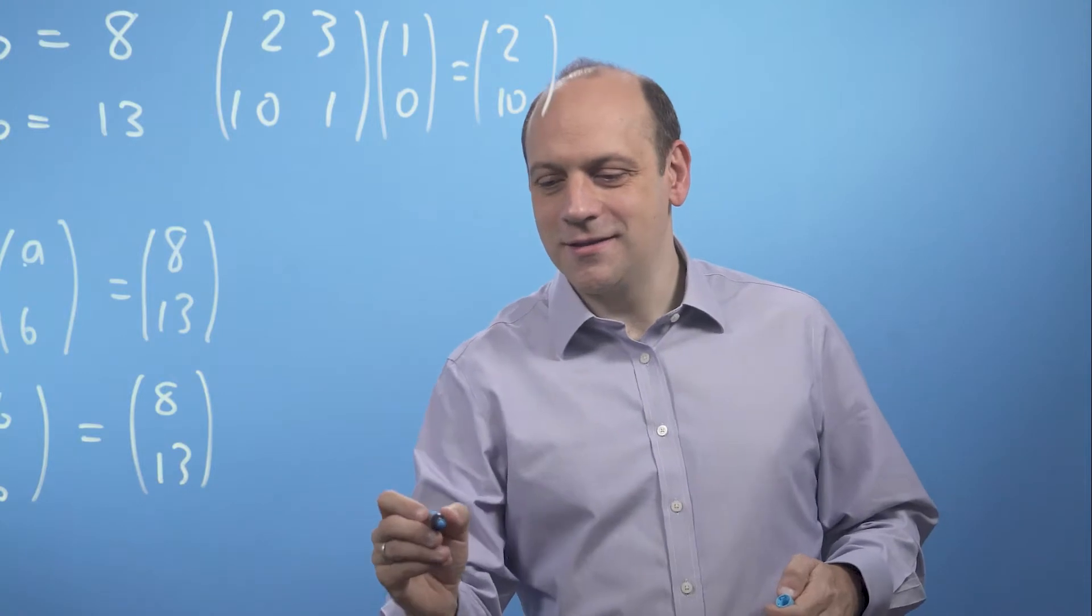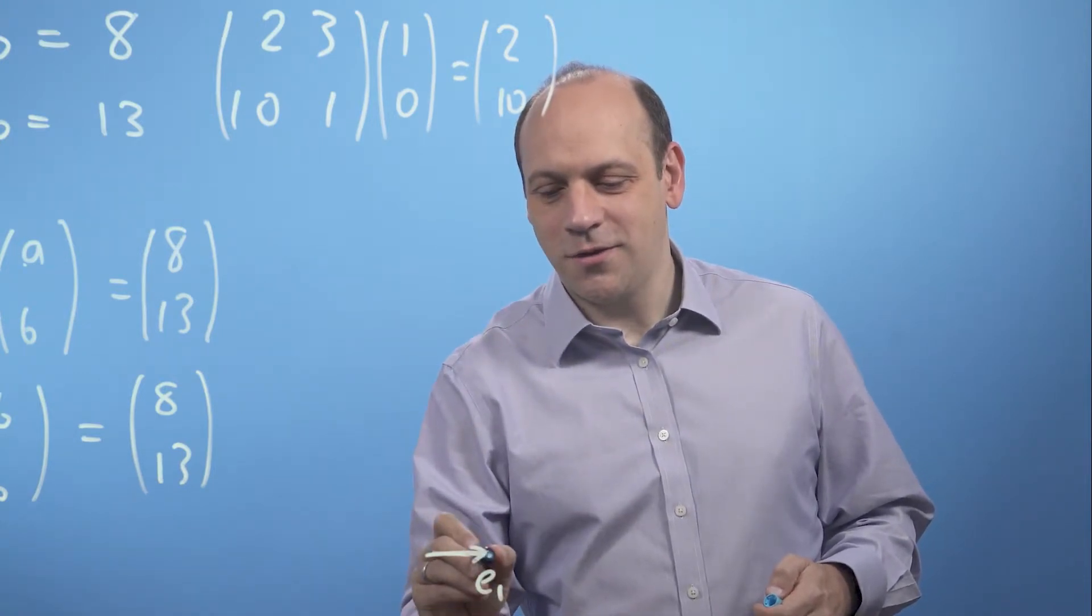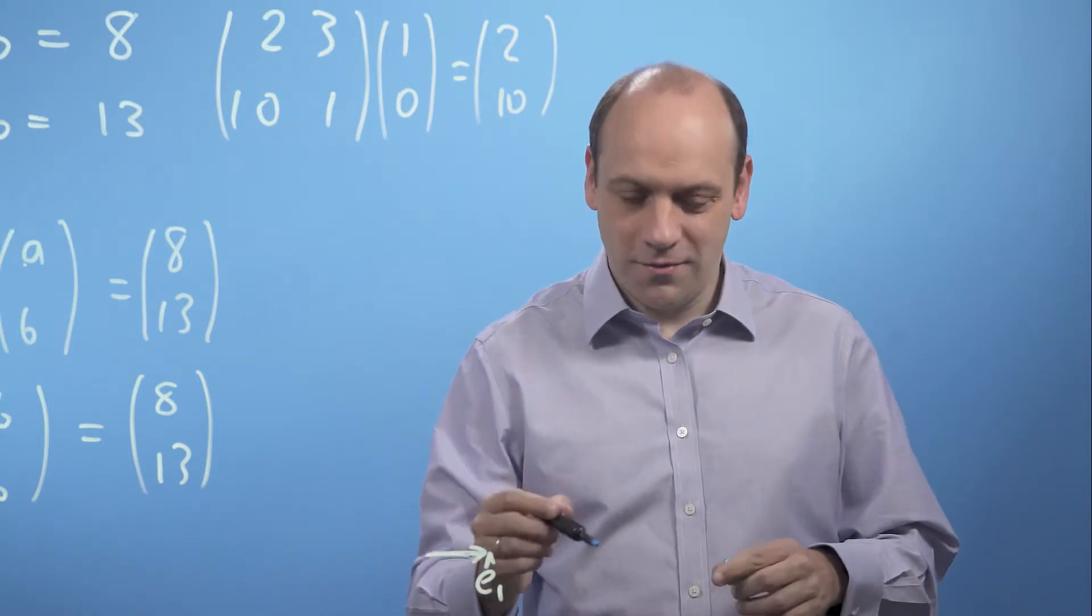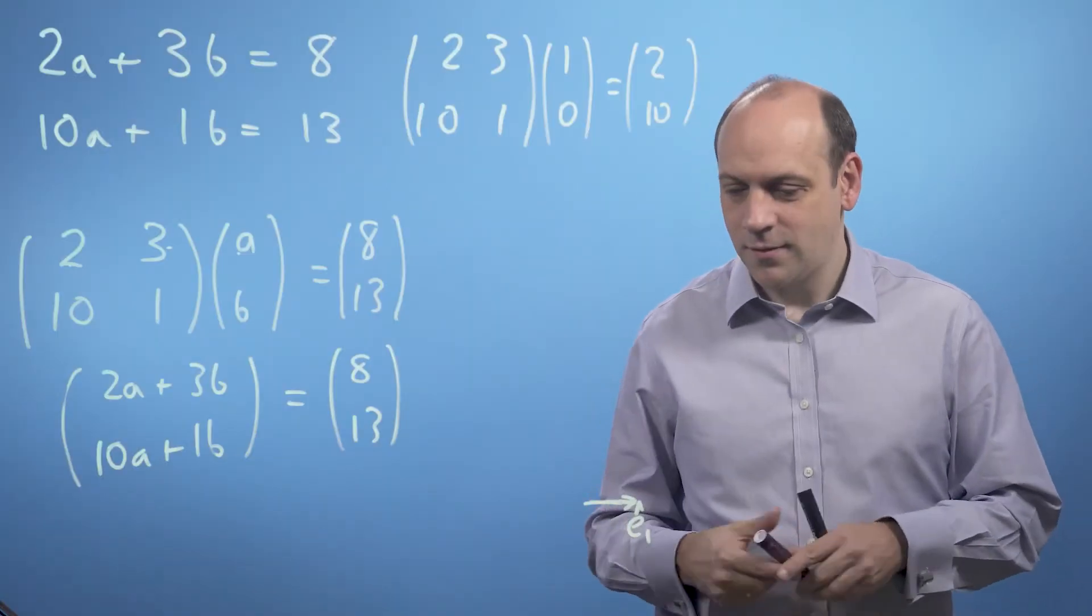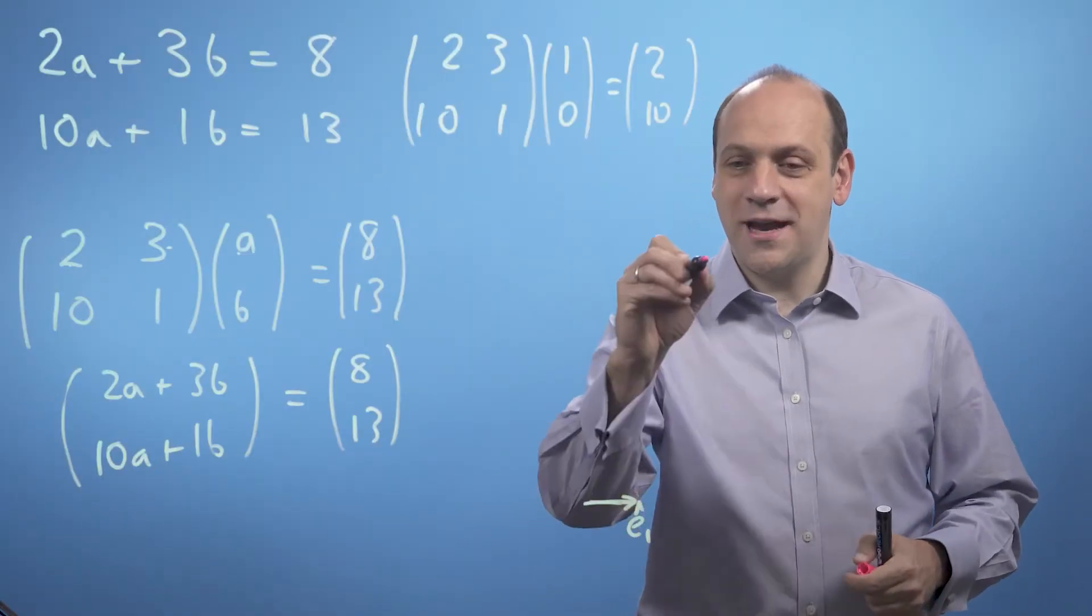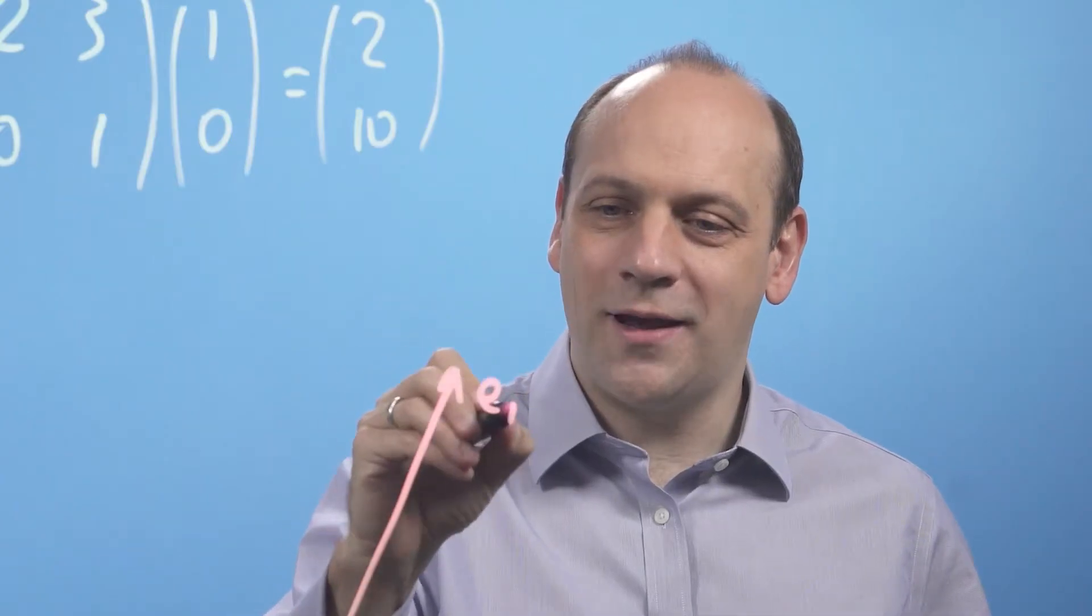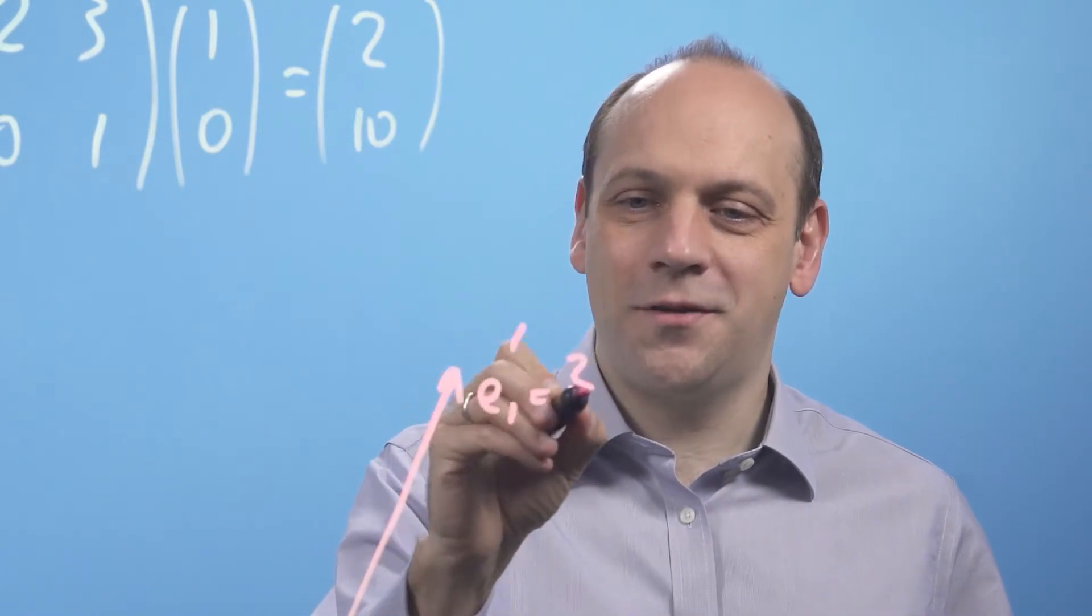So what this does is it takes the little unit vector, which we call e1 hat, and it transforms it to another place, which is 2, 10, which is going to be up here somewhere. So that's e1 hat changed and that's equal to 2, 10.